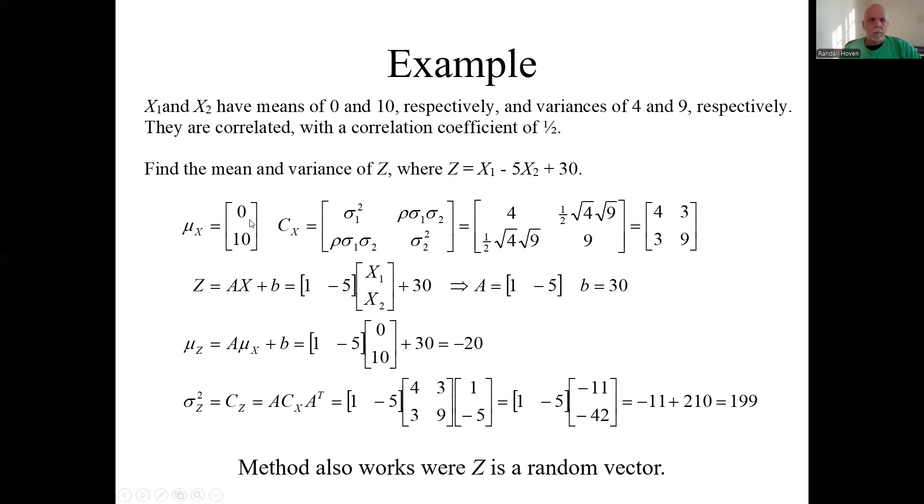Mean of X, remember it was 0 and 10, and this covariance is going to look like this. We had the two variances, they were 4 and 9, so we've got a 4 and 9 there. And what are these off diagonals? Remember it's symmetric, so we only need to calculate one. It's correlation coefficient ½ times their standard deviations, which are just the square roots of the variances. So there is the covariance of X, the random vector.